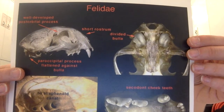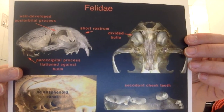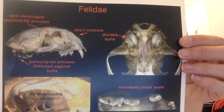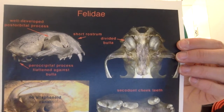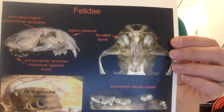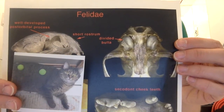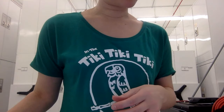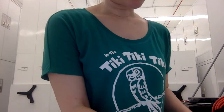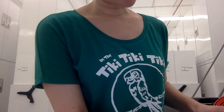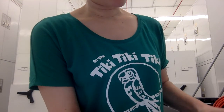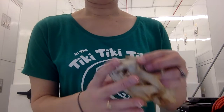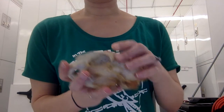This is the Carnivore Lab Station 8, starting with Felidae, the cat. I'm not actually going to show you a domestic cat though. I'm going to start out with one of our Michigan species, a bobcat.